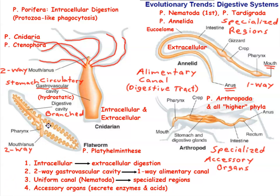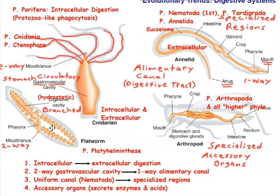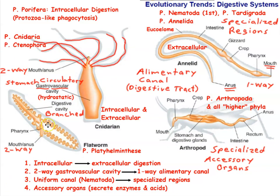Platyhelminthes likewise has a gastrovascular cavity but carries out more extracellular digestion. As we go along in evolution, we see this trend away from intracellular digestion to extracellular digestion. Everything from platyhelminthes on up in the animal kingdom phylogeny uses extracellular digestion for the most part.